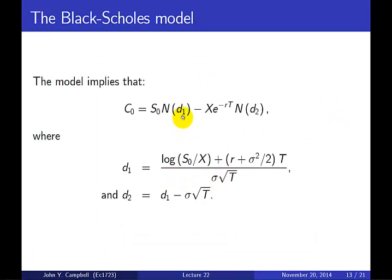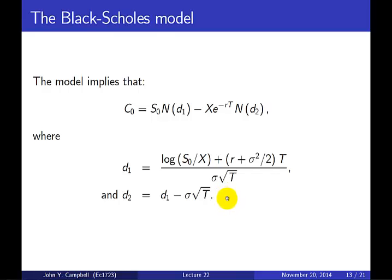Going back to the formula, we have N(D1) and N(D2). D1 is defined as the log of the ratio of the stock price to the exercise price, plus an adjustment for the interest rate, variance, and time, all divided by sigma times the square root of time. D2 is the same as D1 with a further adjustment — we subtract sigma times the square root of time. Those are the components of the formula.